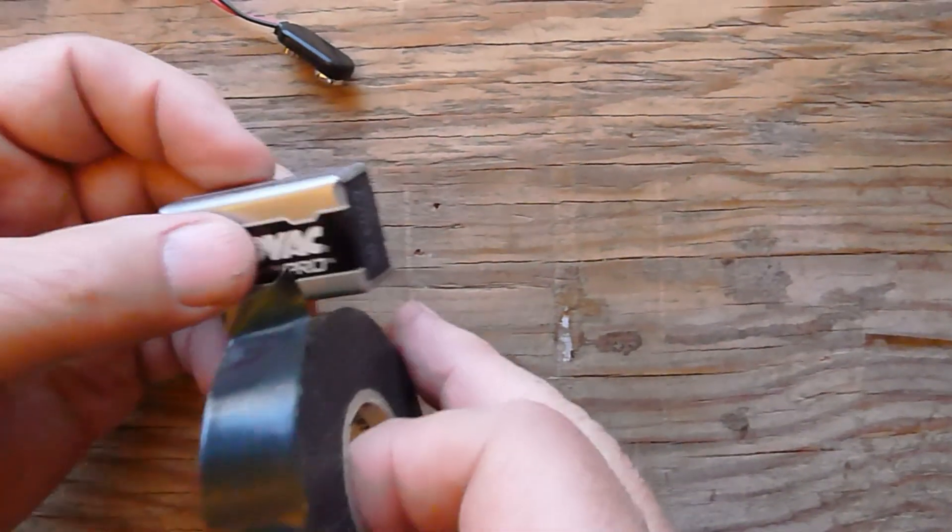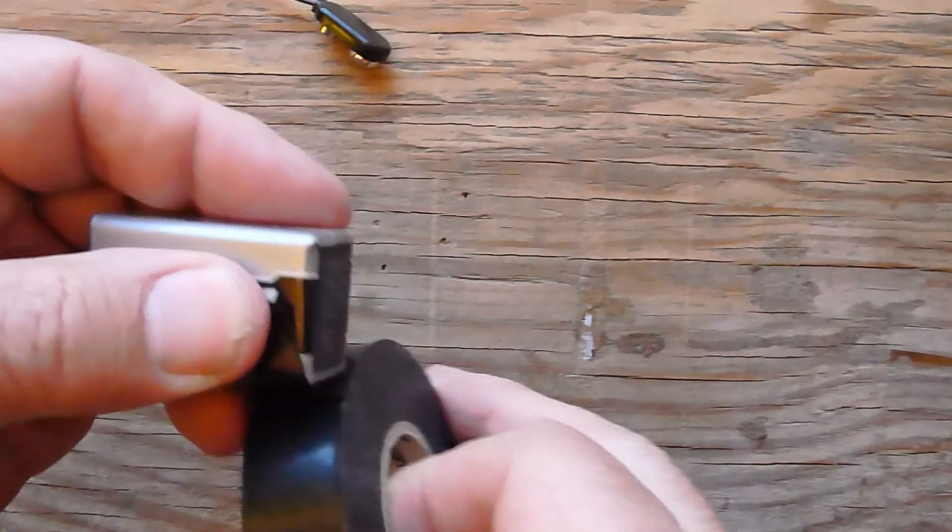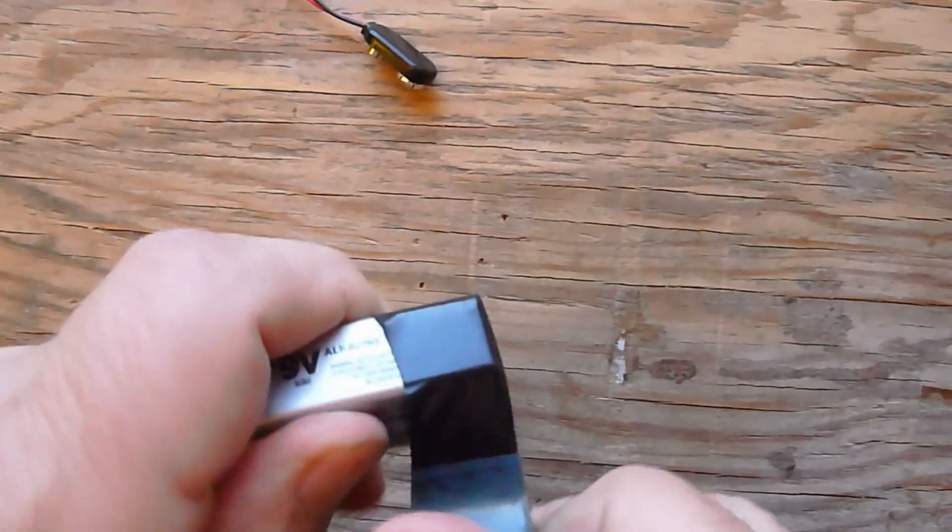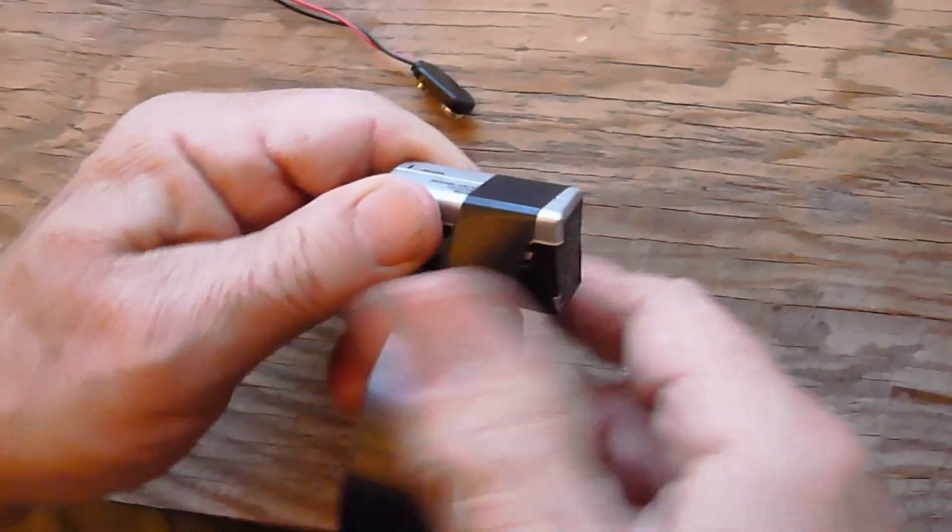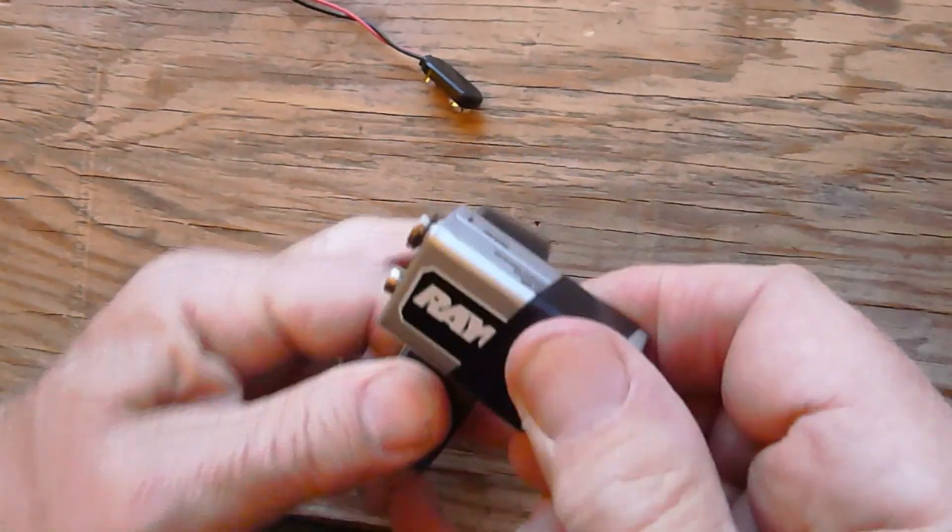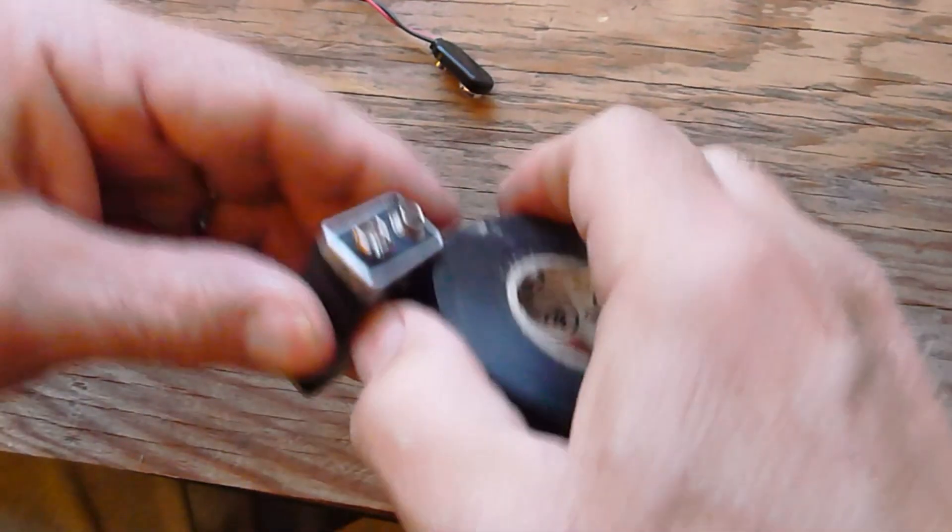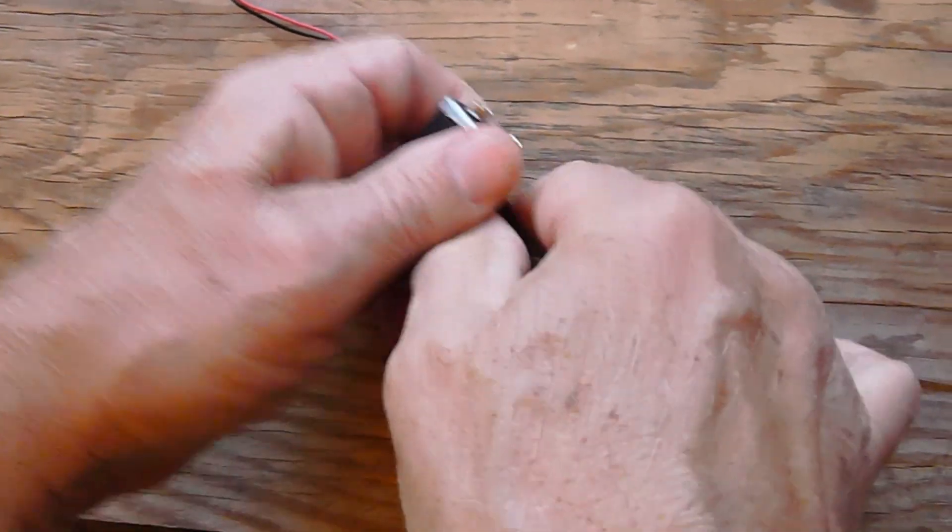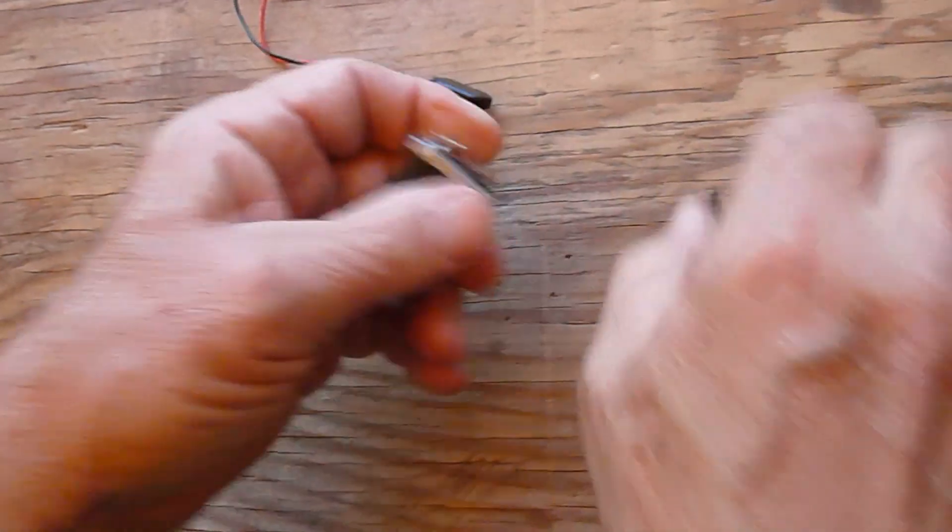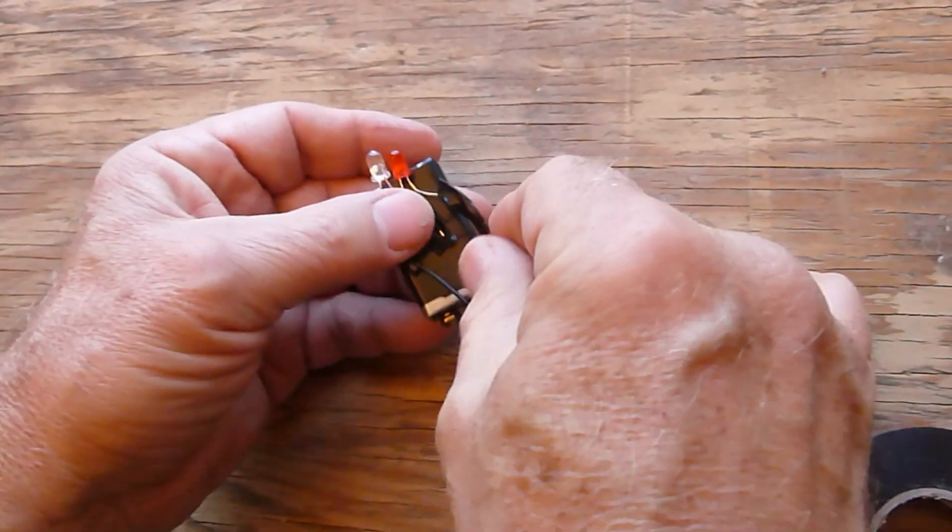Next, we want to attach the wired parts to the battery. But before we do this, we want to insulate the battery by taping it. We put tape on the battery because many batteries have a conductive coating, and this could interfere when we attach the circuit to the battery in the next step.